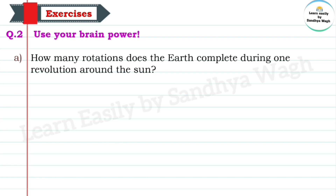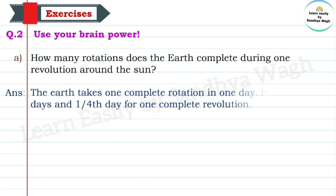So the answer is: the Earth takes one complete rotation in one day. It takes 365 days and one fourth day for one complete revolution around the sun.